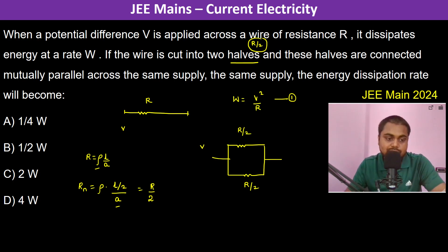The energy dissipation rate will become: the energy dissipated in one of them is W1 = V²/(R/2) = 2V²/R. Therefore in both of them, it's 2 times that, which is 4V²/R, which equals 4W.